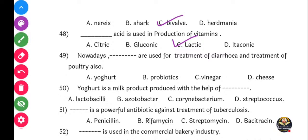Next question: Dash are used for treatment of diarrhea and treatment of poultry also. Options: Yogurt, probiotics, vinegar, or cheese. The correct answer is probiotics, option B.